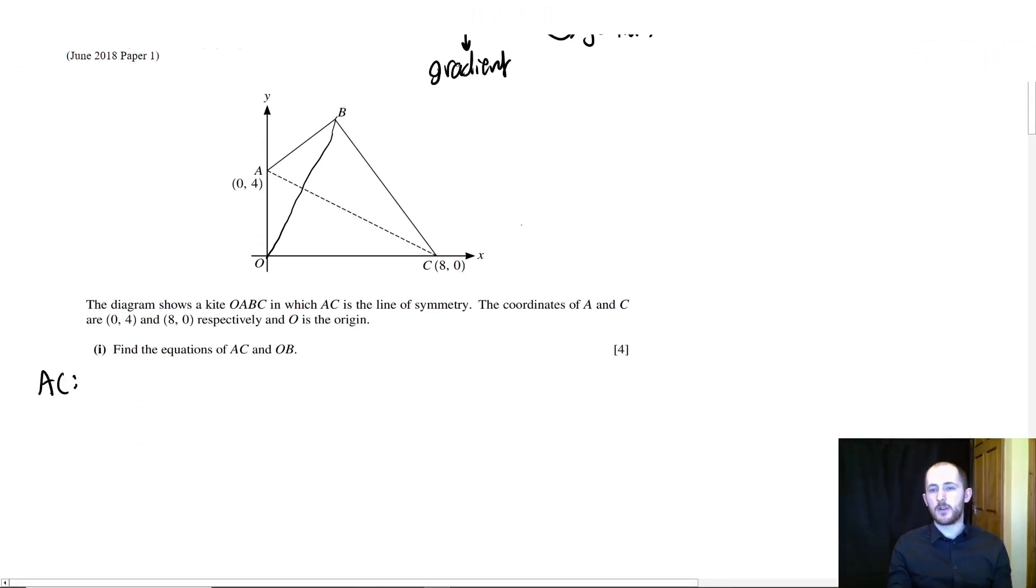Now OB is going to be a line that goes right through here. Let's just start with AC, because I think it's probably the easier one to do. What information have we got? Well we've got two coordinates, perfect. So if we're going to do y equals mx plus c, we can quite easily work out m and c. If we work out m first, the gradient is going to be the change in y over the change in x.